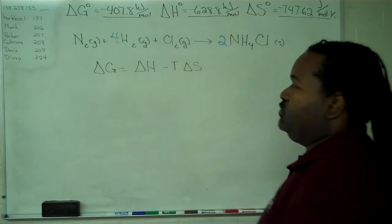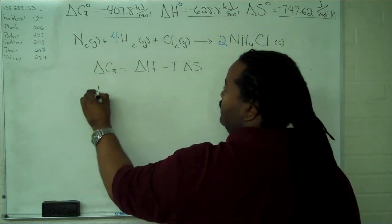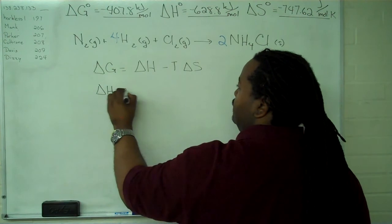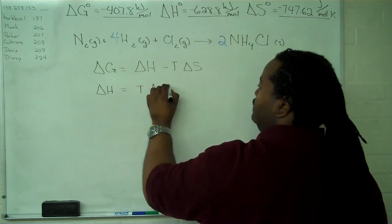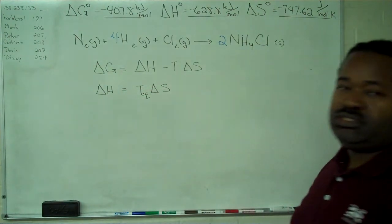If the system is in equilibrium, delta G is zero, and that means that delta H and T delta S are in equilibrium. They're equal to each other.